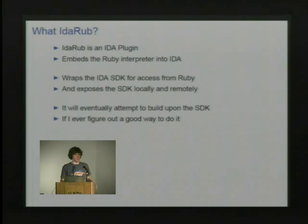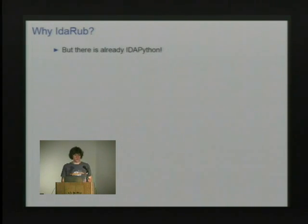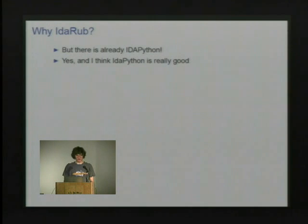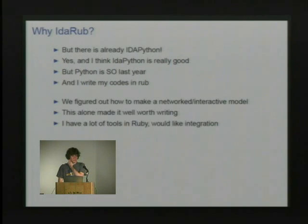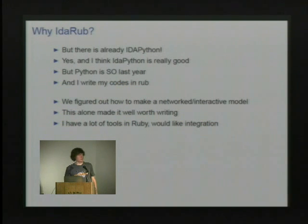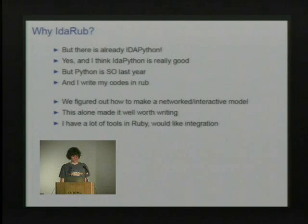The original plan was to build a friendlier SDK, but I haven't really done that yet. The first thing people are going to ask is: there's already IdaPython, so why even care about doing Ruby? IdaPython is really good and I looked at it a lot when I was working on IdaRuby. But I was just doing this for fun and I wanted to write in Ruby. And when we figured out how to do the network model and the interactive model — which I think is really important and probably one of the most valuable pieces — I only knew how to do it for Ruby, so I just did it all in Ruby.